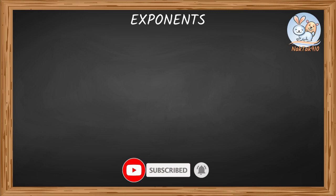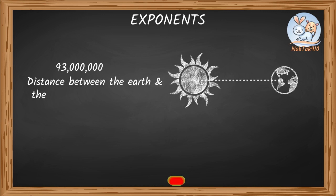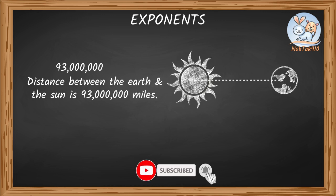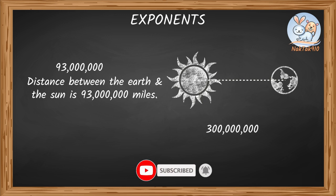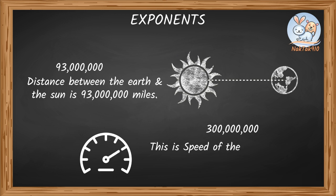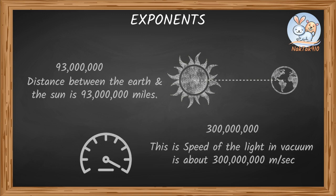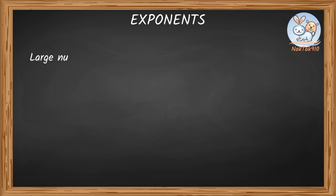Exponents — what are exponents? We'll talk about that in a minute, but tell me how you read this number. 93 million. Correct! That's approximately the distance between the Earth and the Sun — 93 million miles. How about this number? 300 million. Right, that's the speed of light in a vacuum, about 300 million meters per second. It's often hard for us to read such numbers because they're very large. To represent such numbers in an easier way, we use exponents.